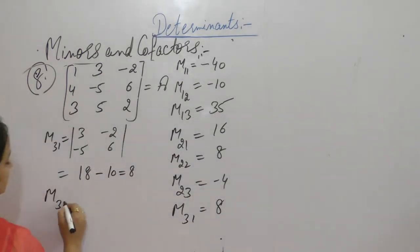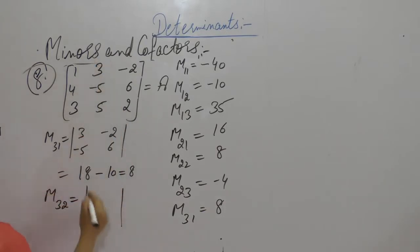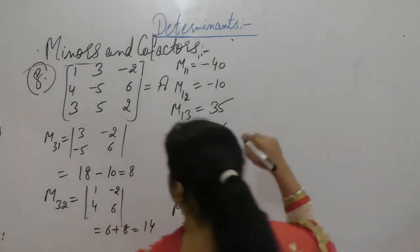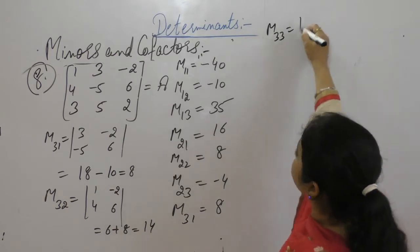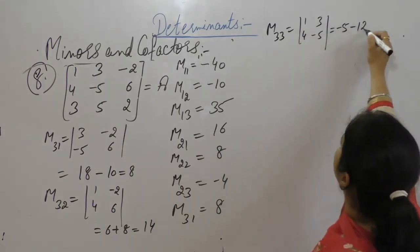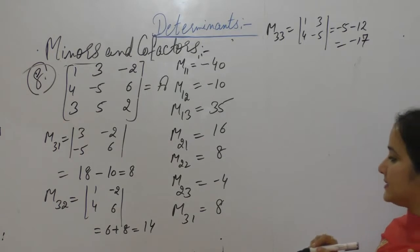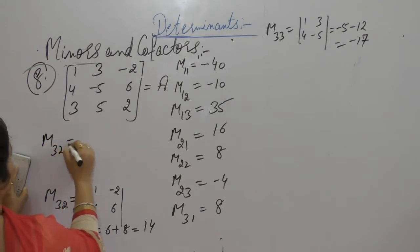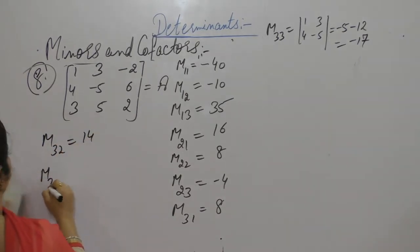M32: deleting third row and second column gives 1, 4, minus 2, 6. 6 into 1 minus plus 4 into 2 gives 8 plus 6 is 14. M33: deleting third row and third column gives 1, 4, 3, minus 5. Minus 4 into 3 is 12, so minus 17. So M31 is 8, M32 is 14, M33 is minus 17.